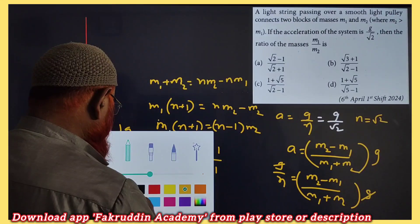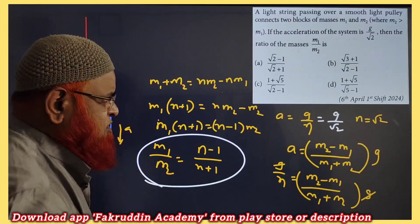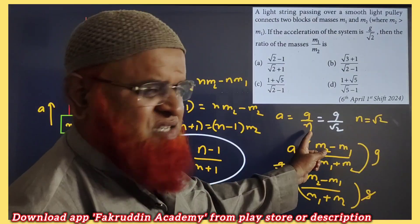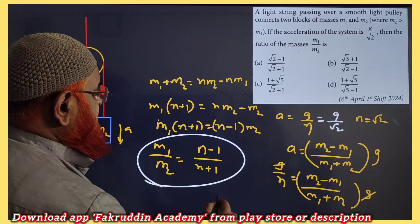So therefore, your short trick is ready here. Your short trick is ready. You can just say n is equal to root 2. That's it. So this is going to be a short trick here.